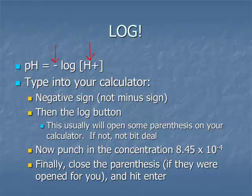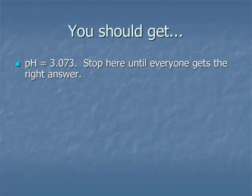Some calculators demand that you punch in the number first and the function second. If you see syntax error, hit negative sign, punch in the number, then hit log. You should get 3.073. Stop here until everyone gets the right answer. If you cannot get the right answer, ask for help.